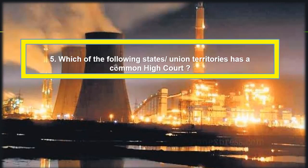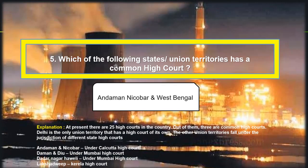Which state or union territory has a common High Court with another? Andaman and Nicobar and West Bengal share the Calcutta High Court. At present there are 25 High Courts in the country. Delhi is the only Union Territory with its own High Court. Andaman and Nicobar falls under Calcutta High Court, Daman and Diu and Dadra Nagar Haveli under Mumbai High Court, and Lakshadweep under Kerala High Court.